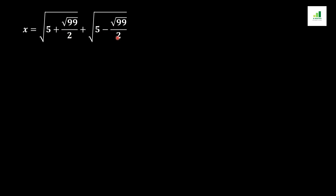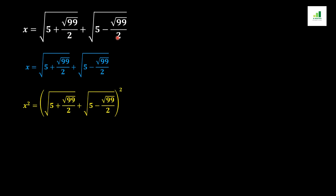In order to solve this question, first we should apply squaring on both sides of the equation. We will get x² = [√((5 + √99)/2) + √((5 − √99)/2)]². We can see that if this first term is 'a' and the second is 'b', raised to the overall square, it can be expanded using the (a + b)² formula.